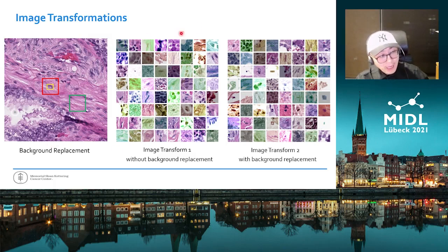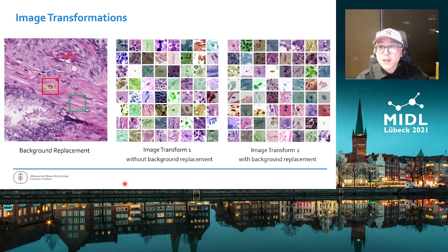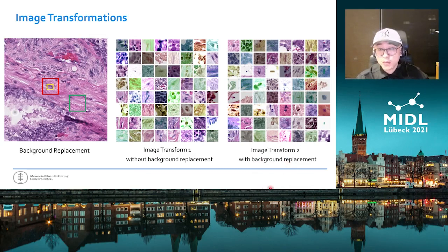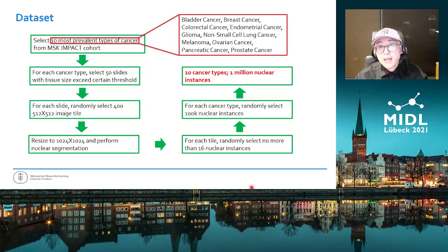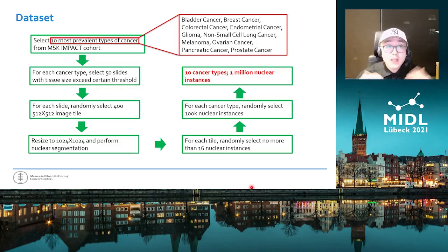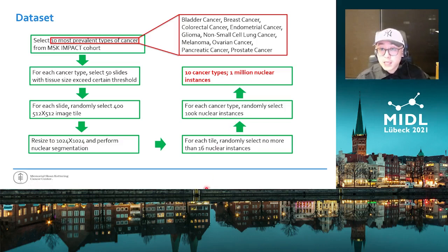Here I show you eight-by-eight examples of nuclear instances where the aforementioned series of standard image transformations were applied to each instance randomly. For the batch on the right, the background replacement transformation is also applied. To train our Nuke2Vec model, we selected the 10 most prevalent types of cancer from our MSK IMPACT patient cohort, including bladder cancer, breast cancer, colorectal cancer, etc. For each cancer type we selected a certain number of slides, and for each slide a certain number of image tiles. We conducted nucleus segmentation and eventually randomly selected 100k nuclear instances per cancer type, leading to a dataset of one million nuclear instances from the 10 cancer types.